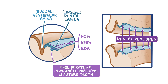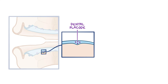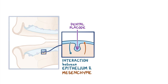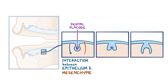As the dental placodes continue to proliferate, the tooth undergoes morphogenesis, which results in different tooth shapes. This is guided by interactions between epithelial and mesenchymal tissues and progresses through distinct stages defined by morphological features of the dental epithelium: the bud, cap, and bell stages.